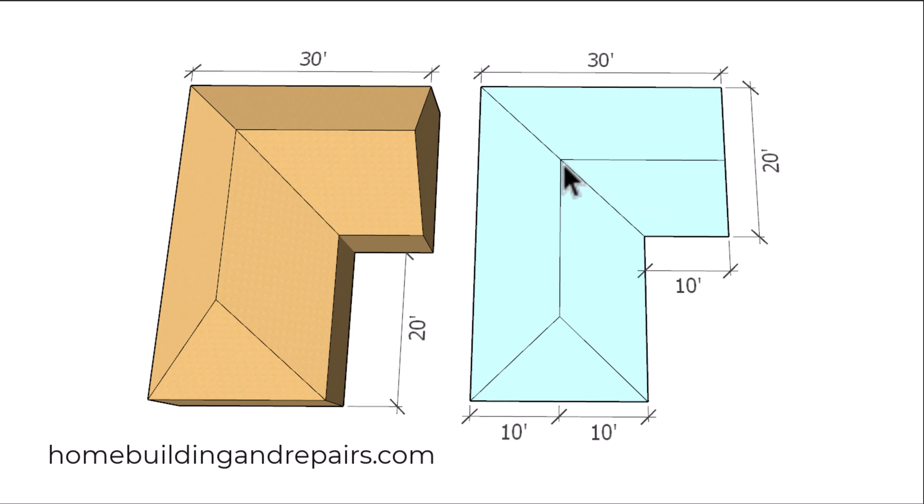And to get this measurement here, we're just going to subtract half of the span, 10 feet here, which we would have 10 feet here. So if I subtract 10 feet from 30 foot, I'm going to have a 20 foot long roof ridge over here.